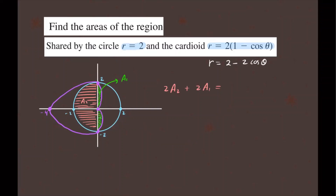For A1 — that green piece — the integral goes from 0 to π/2, since the cardioid covers that angle range. So A1 equals the integral from 0 to π/2 of (1/2) r squared d theta, where r equals 2 minus 2 cosine theta. We double that, so we put a factor of 2 out front, giving us 2 times A1.